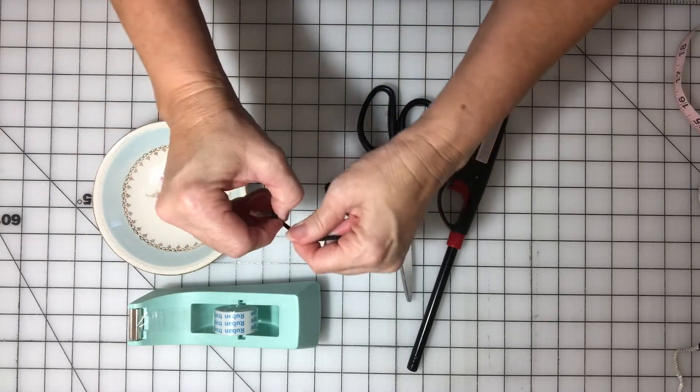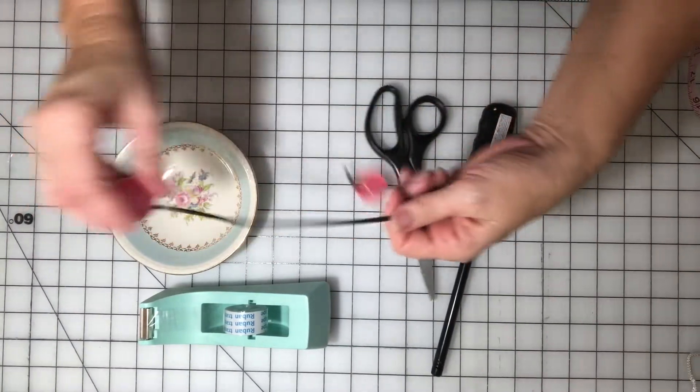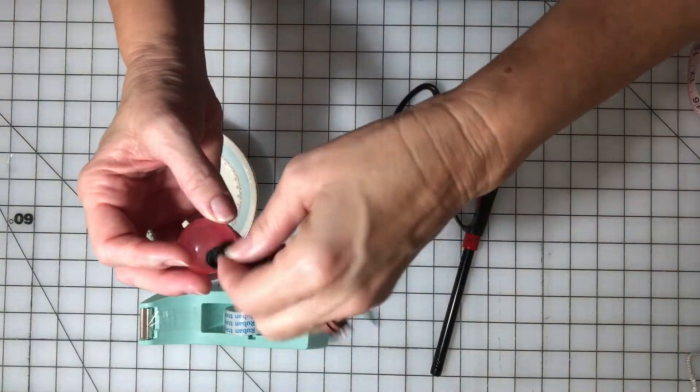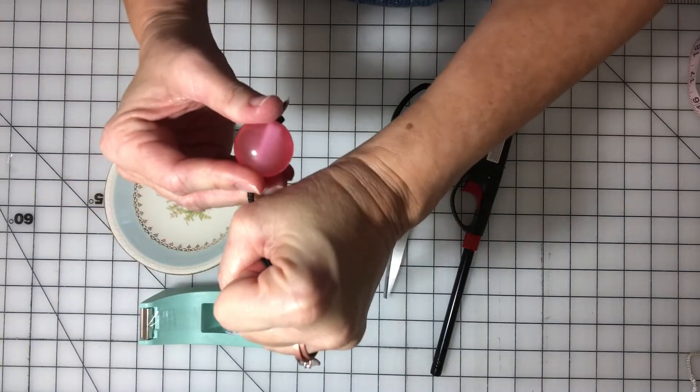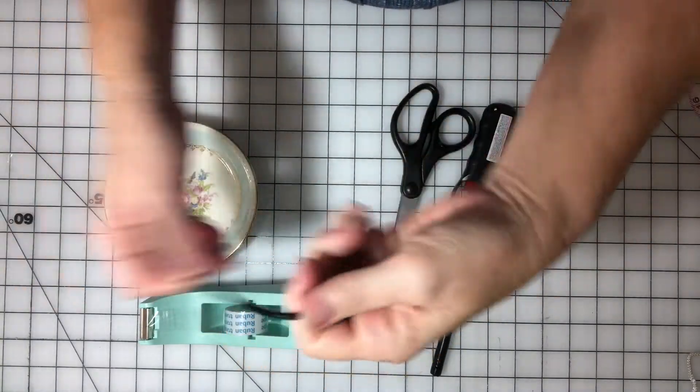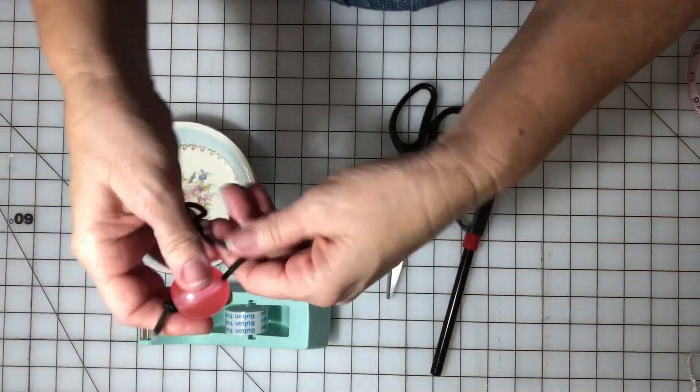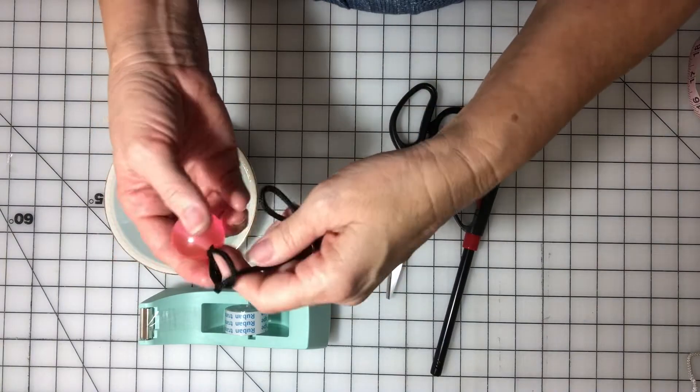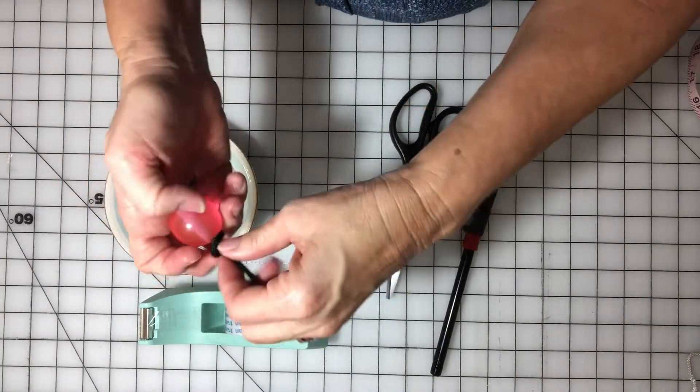Tie a knot at the end of this one and then we're going to tie a loop to hold the bead here at the bottom on the very top of it like that. Get that knot as close to the bead as you can. Do the same over here and get as close to this bead as you can.